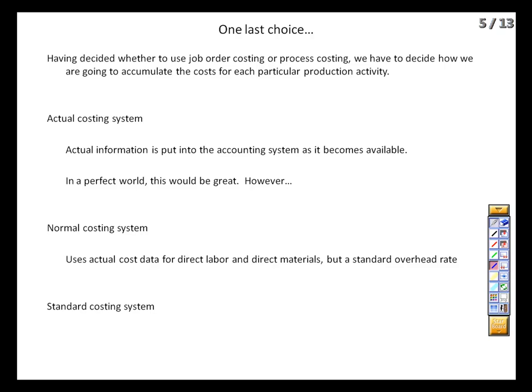One last option is the standard costing system, which does all costing based on standard rates — they know how much it should cost to produce a particular product based on engineering estimates or past experience, and that's what they use. Of course, we are spending money in real time and those amounts may not be exactly what we expect. So at the end of the period, we do a true-up between what we thought we should have spent and what we actually spent, and then try to explain those variances. We'll talk more about variances in the next class.